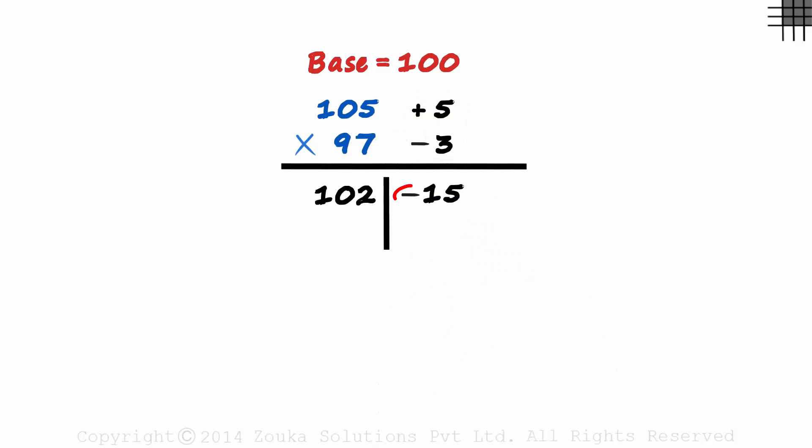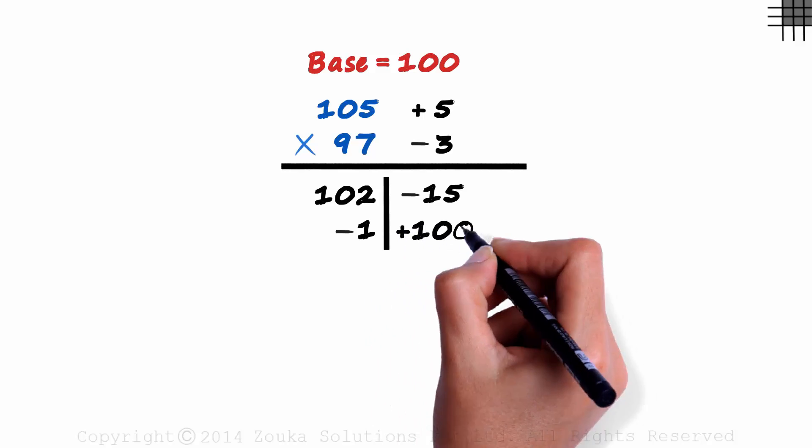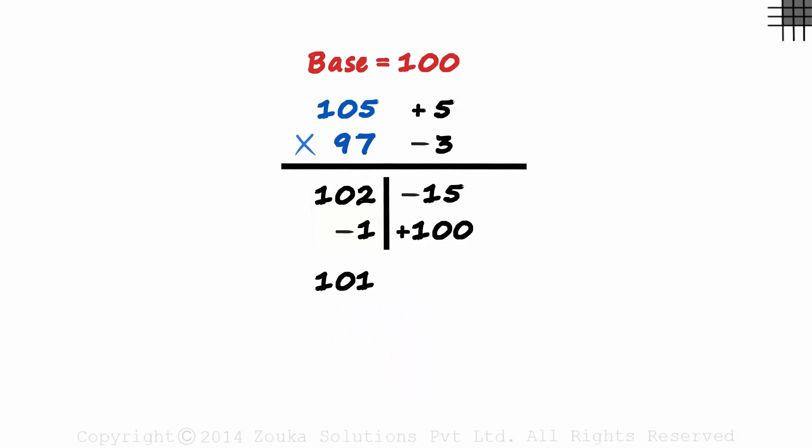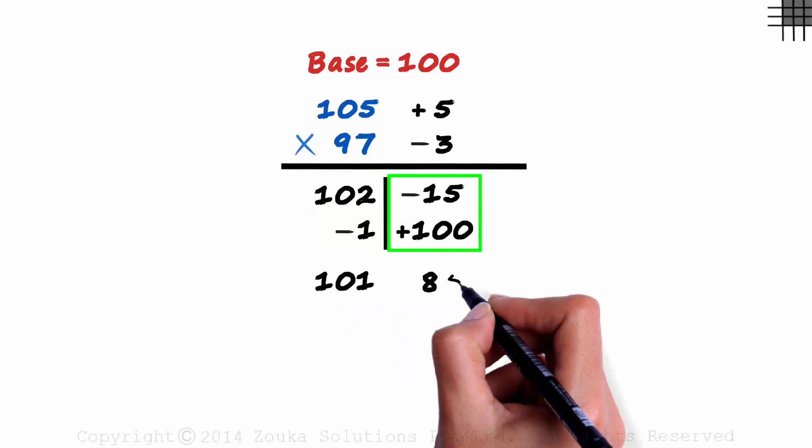As we cannot have a negative number on the right, we subtract 1 from the left hand figure and add the base to the right hand figure. On the left hand side, we will have 102 minus 1 and on the right we add 100. 102 minus 1 is 101, and minus 15 plus 100 is 85.